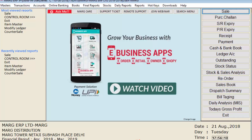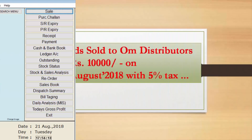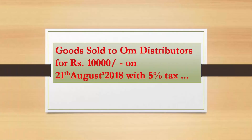Let's take an example and implement it in the software to understand the sale option of voucher entry. The example: goods sold to Om Distributors for rupees 10,000 on 21st August 2018 with five percent tax. Let's implement this example in the software in both ways.